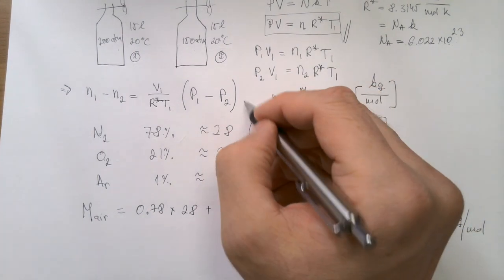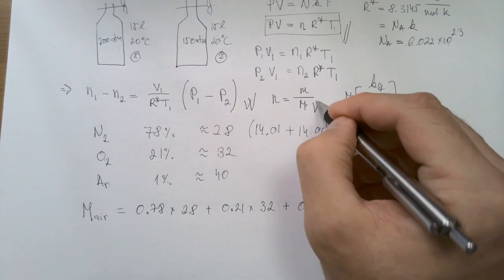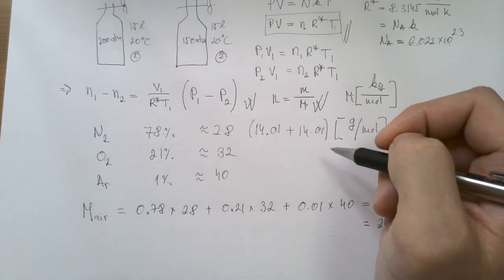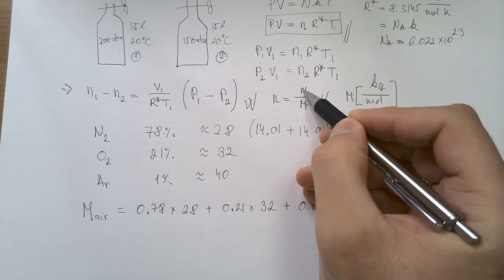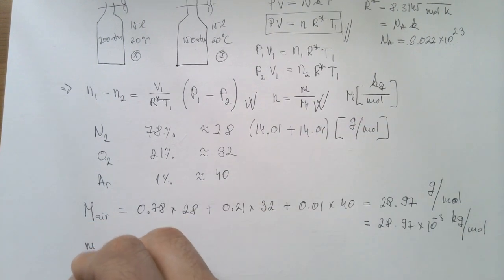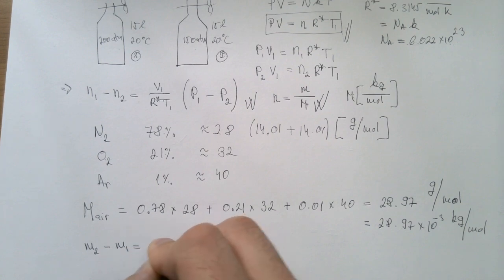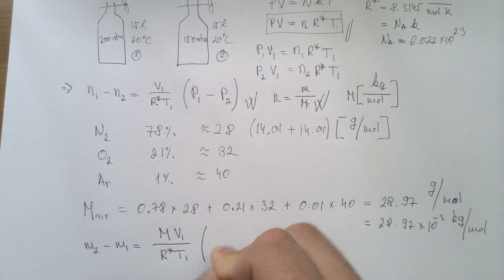Now, if we go back to this equation over here, and I combined it with this expression over here, you can see that I can substitute instead of N, this M over capital M, and I will get that M2 minus M1 is equal capital M, V1 divided by R star T1, P1 minus P2.